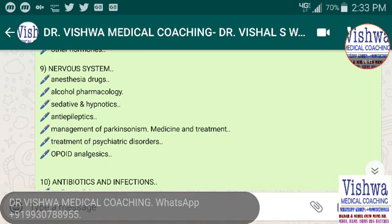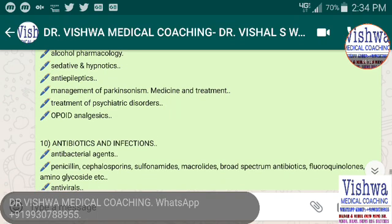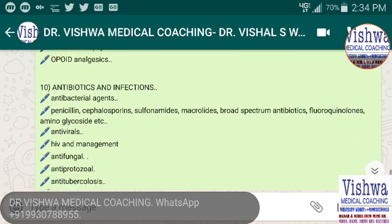In the nervous system, we take topics like anesthesia drugs, pharmacology of alcohol and alcohol dependence treatment, sedatives and hypnotics, antiepileptics, Parkinsonism from medicine and pharmacology perspectives, psychiatric disorders, and opioid analgesics.